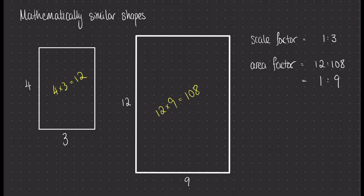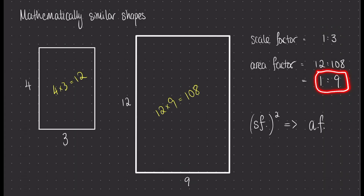This gives us a hint as to how the area factor is linked to the scale factor. To go from the scale factor — which I'll abbreviate as Sf — to the area factor, what I need to do is square it. We can see that's the case with our numerical solution: if we squared both sides of the scale factor ratio 1 to 3, we end up with our area factor 1 to 9.